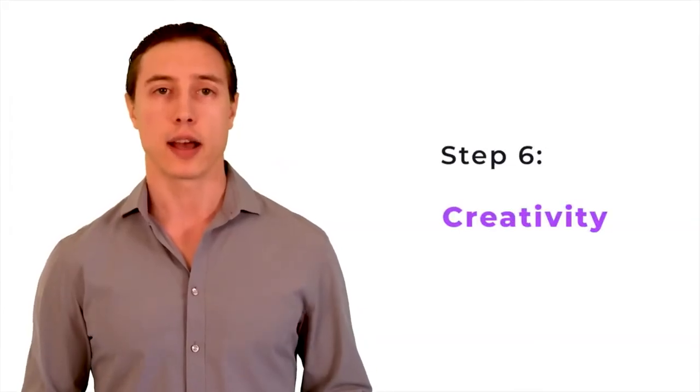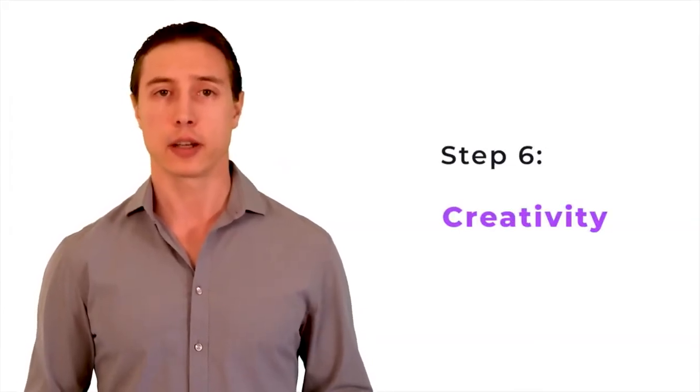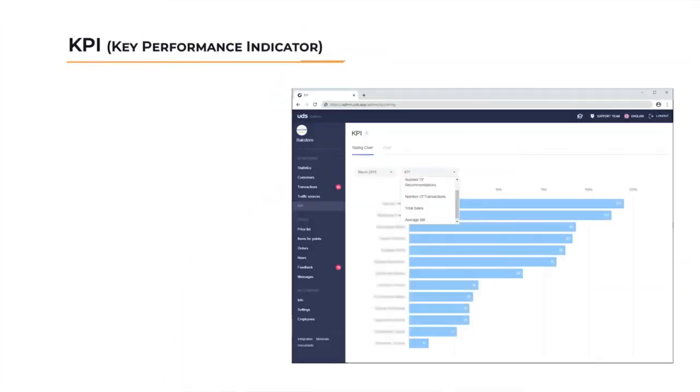And finally, the last sixth step is to add just a little creativity. For example, the store has made an arrangement with a fashion blogger and the system tracks all activities and purchases from a particular referral code. Statistics in the KPI section keeps all the staff members accountable according to the main indicators of the company.